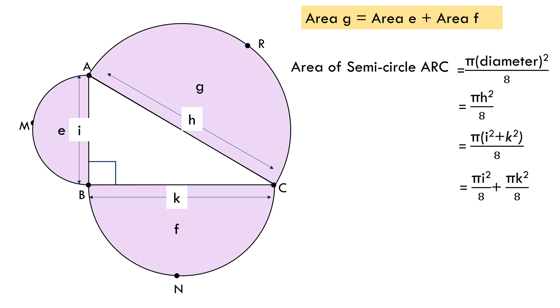Eventually we get area of semicircle on hypotenuse equals πI²/8 plus πK²/8. Here πI²/8 is the area of the semicircle on leg AB, and πK²/8 is the area of the semicircle on leg BC. Therefore, area of the semicircle on hypotenuse is equal to sum of areas of the semicircles on the legs of the triangle.